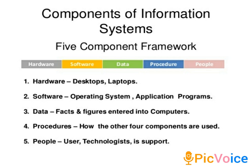Next we see software. Computer software is used for analyzing and processing of data through programs and applications. In programming terms, it is a set of instructions used to control and coordinate the hardware. Computer software is of three types: application software, system software, and procedures. Without software, we cannot access business-oriented information and applications — it is impossible to use a system without software.